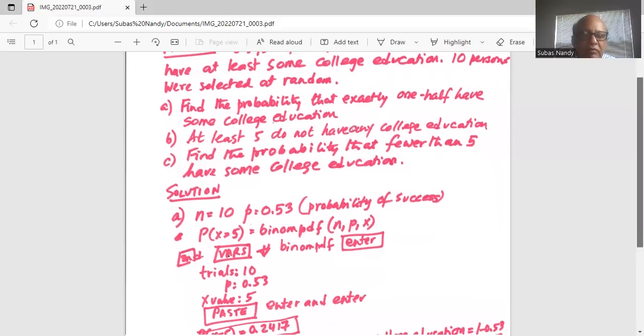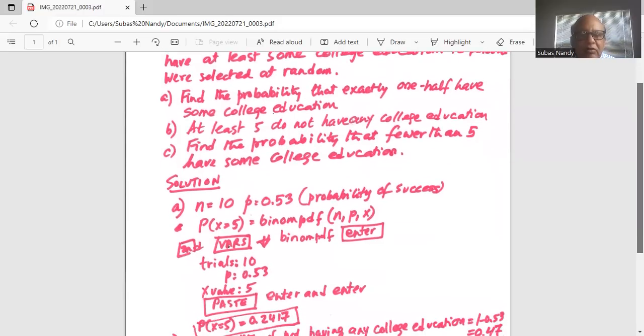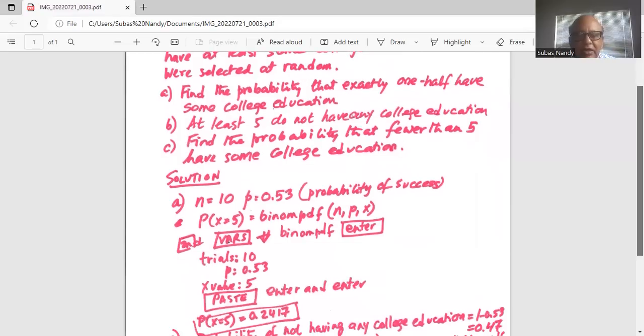We bring our cursor down to paste and hit enter and enter. And the answer for probability x equal to five is 0.2417.